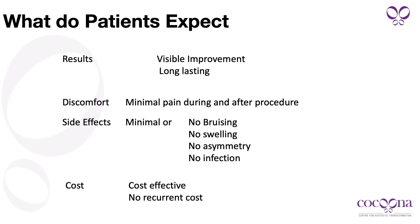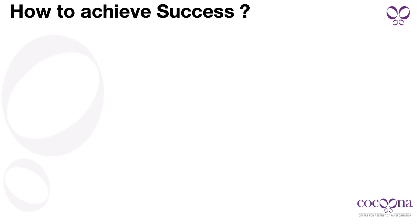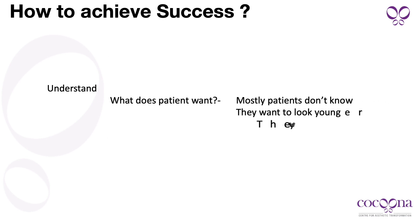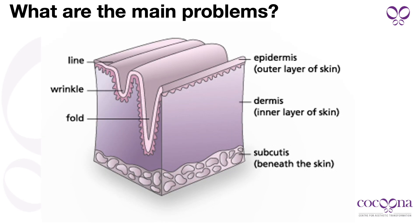Let's go through all the fillers and see what's possible and what is not possible. To achieve success in filler injections, we need to understand what the patient wants. Most of the time patients come with problems of skin aging, not knowing exactly what they want — they may want to look younger, look fresh, want compliments from their family and colleagues. So we need to get into the details of the aging process to differentiate between wrinkles, lines, folds, and sagging skin.